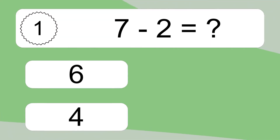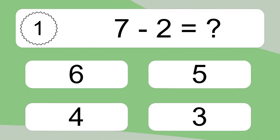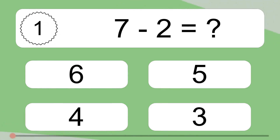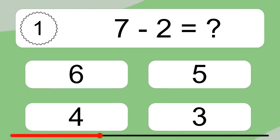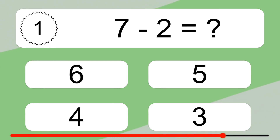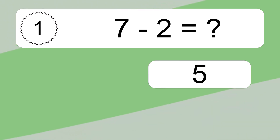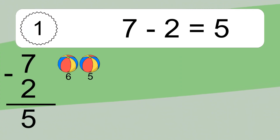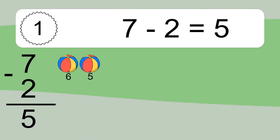7 minus 2 equals what? 7 minus 2 equals 5. Let's count it: 6, 5.